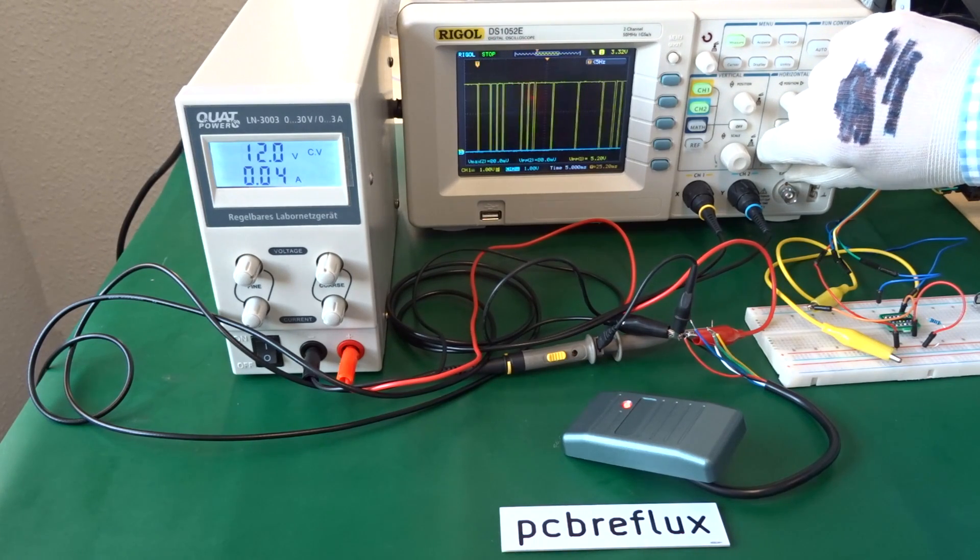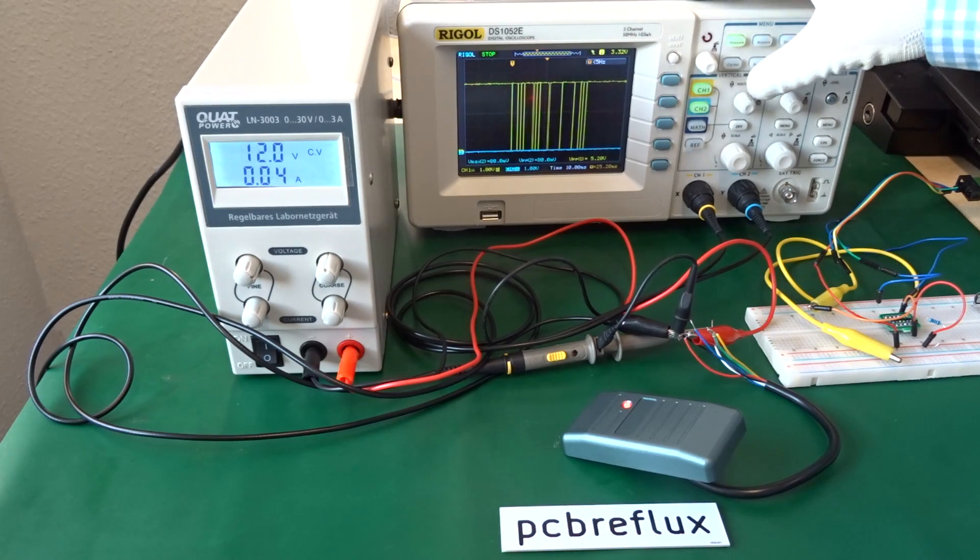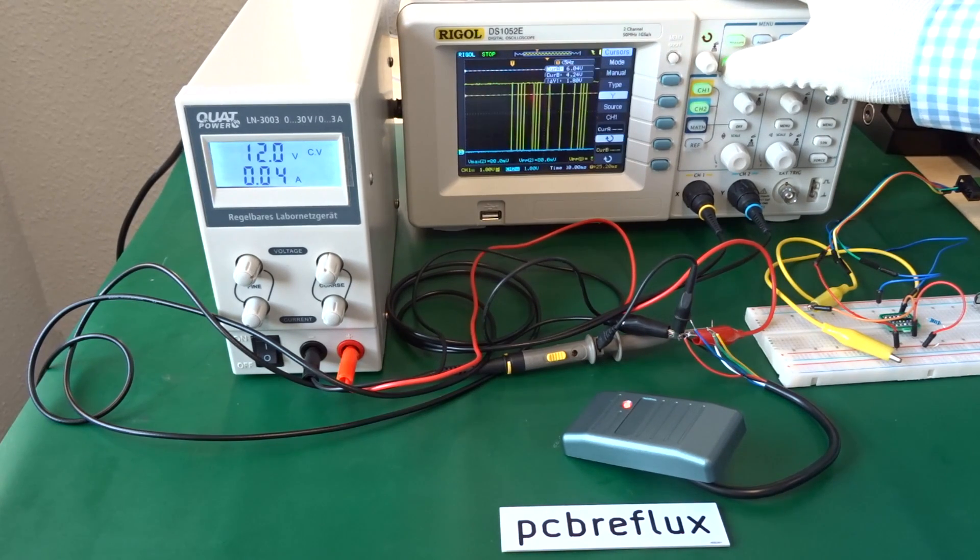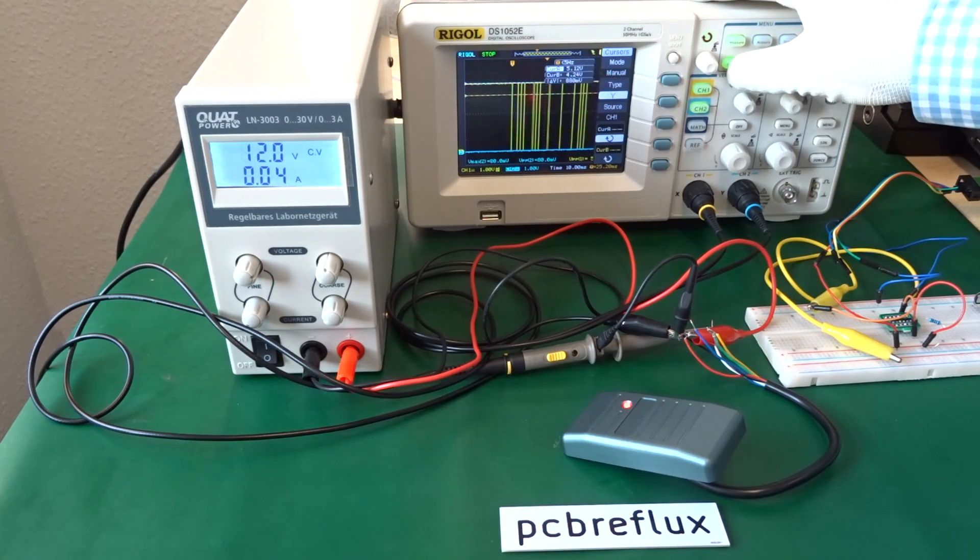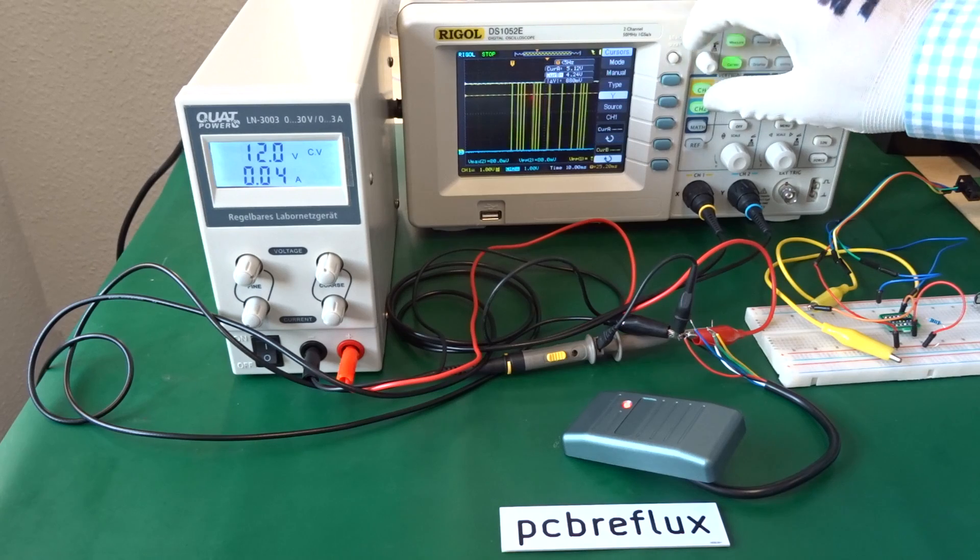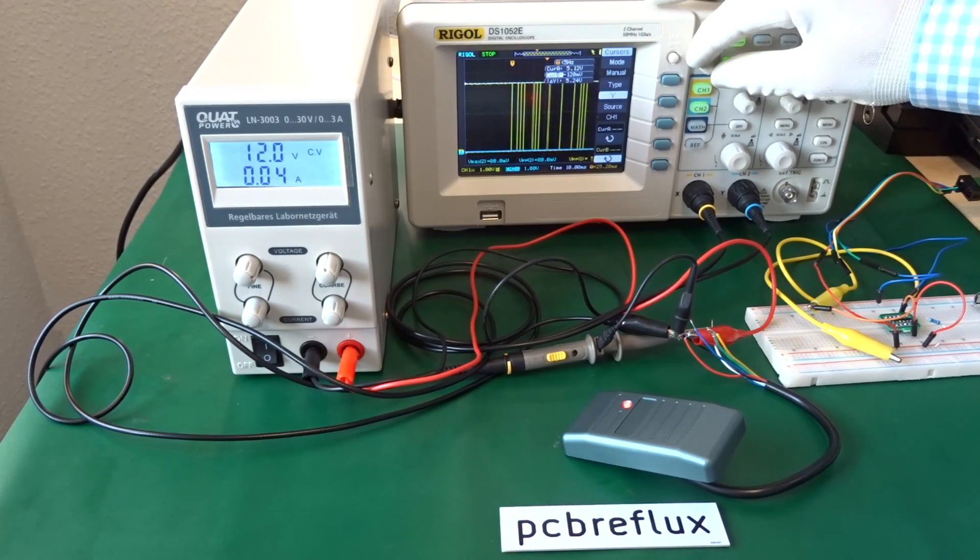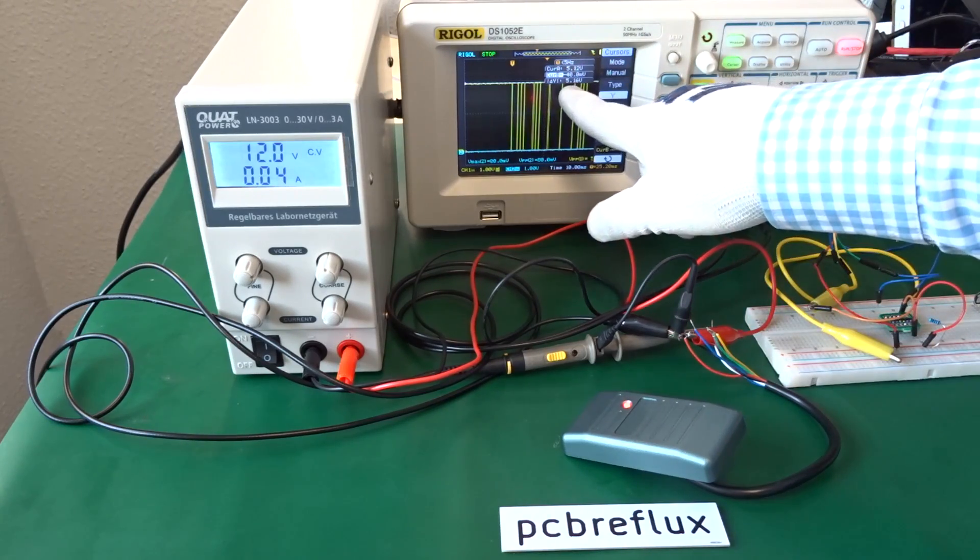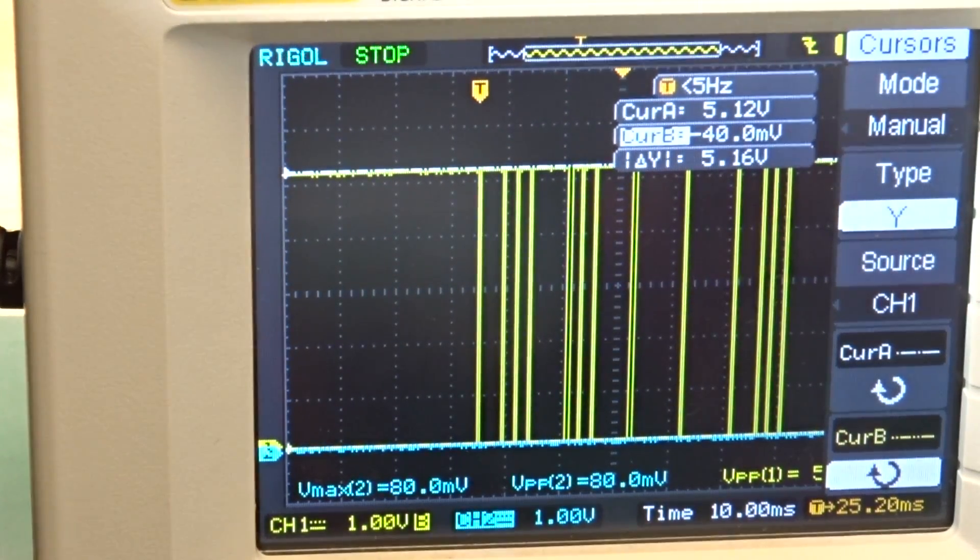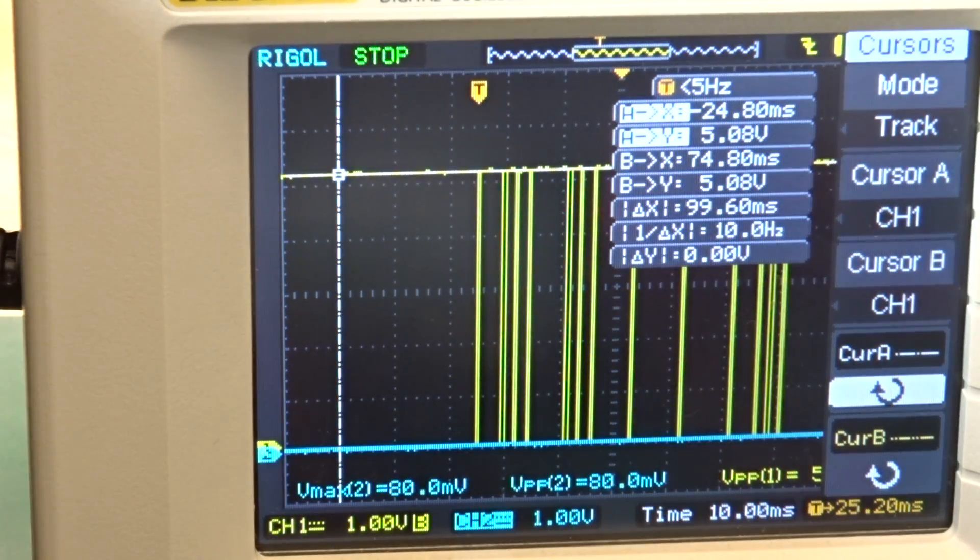and we can check this if our signal is completed if we switch between different time settings and now I use the cursors to check if the high and low level are really between zero and five volt and as you see cursor a is at round about five volt and cursor b is around about by zero volt so we have a difference of five volt level and now we can zoom a little bit to our oscilloscope screen and see that the voltage peak to peak is also at round about five volt for our signal